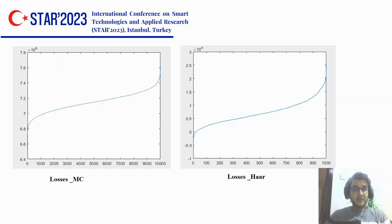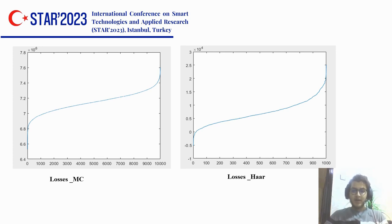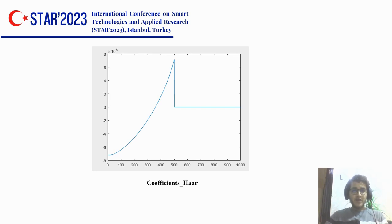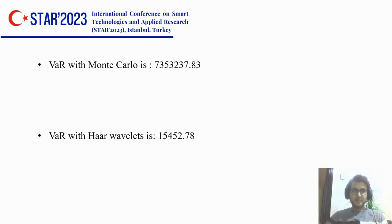This is the presentation of losses using the standard method and the wavelet method. The standard method is the Monte Carlo method. The calculation of losses uses the calculation of approximation coefficients. We show the difference between the VaR (value at risk) computed by Monte Carlo and by Haar wavelets.